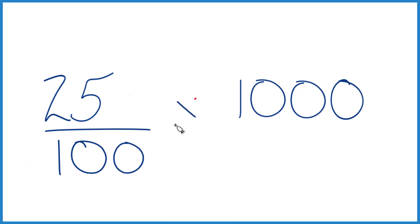So 25 over 100 times 1,000, let's call it 1,000 over 1, still 1,000, but things line up nice.